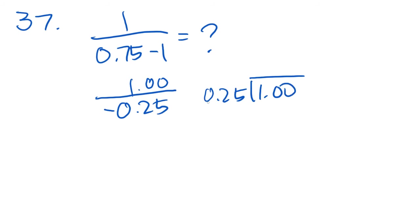We'll have 0.25 into 1.00. We move the decimal point over two spaces, and 25 goes into 100 four times. And so the answer is going to be negative 4. And that is answer choice A.